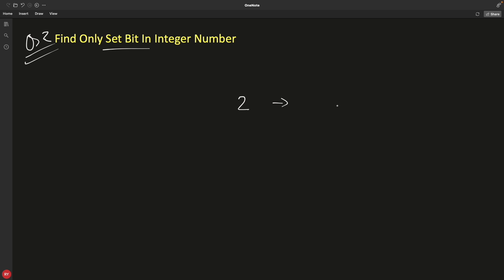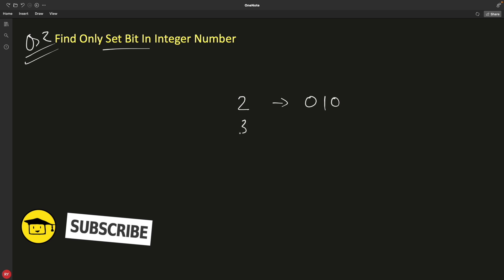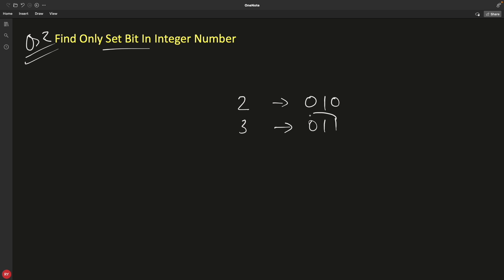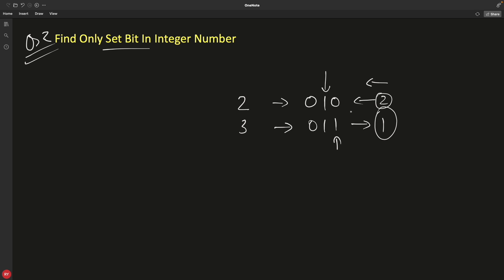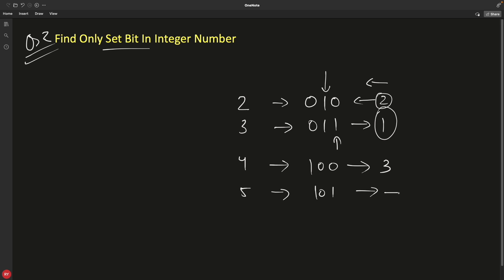So if your number is 2, then the binary representation considering 3 bits looks like this. And if we consider 3, then we have 0, 1, 1. We have to find how many times you count from the right-hand side to find the first set bit. For 3, the first set bit is at the first place, so you return 1. For 2, the first set bit is at the second place, so you return 2. If it is 4, which is 1, 0, 0, you return 3 because it's at the third location. And if it is 5, which is 1, 0, 1, you return minus 1 because we have two set bits.